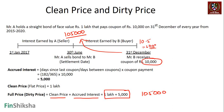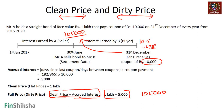So the clean price assumes there is no accrued interest. Dirty price equals clean price plus accrued interest, where accrued interest is the interest for the number of days the bond has already been held. This is simple to calculate.